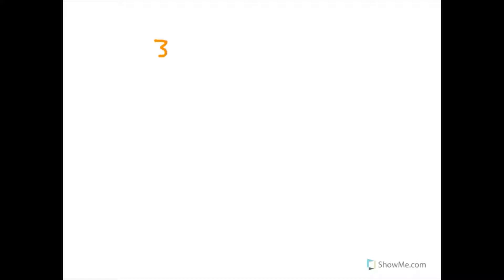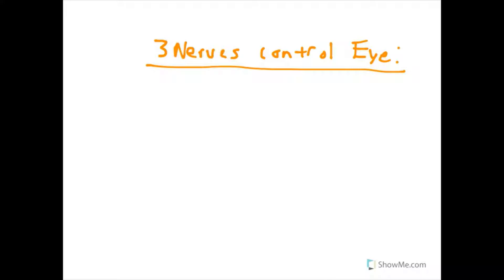There are three cranial nerves that control eye muscle movement. I'm going to start not in numerical order — I'm going to discuss first CN6, the abducent nerve, which controls the lateral rectus muscle.